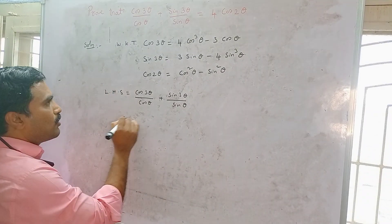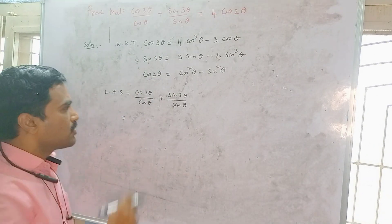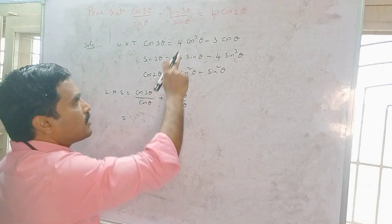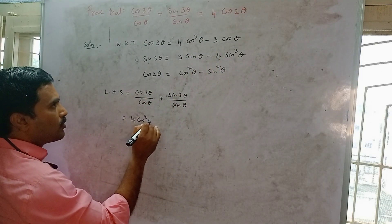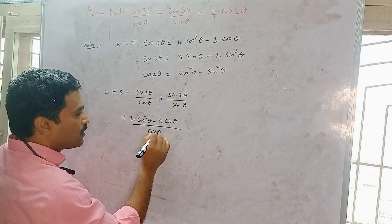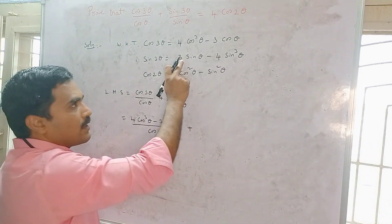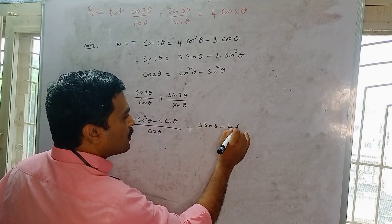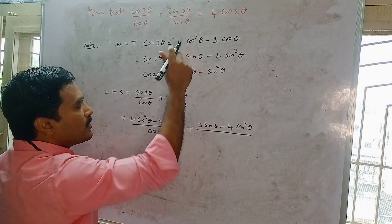We simplify using the sin 3θ and cos 3θ formulas. Substituting cos 3θ: (4cos³θ − 3cosθ) / cosθ. Then substituting sin 3θ: (3sinθ − 4sin³θ) / sinθ.